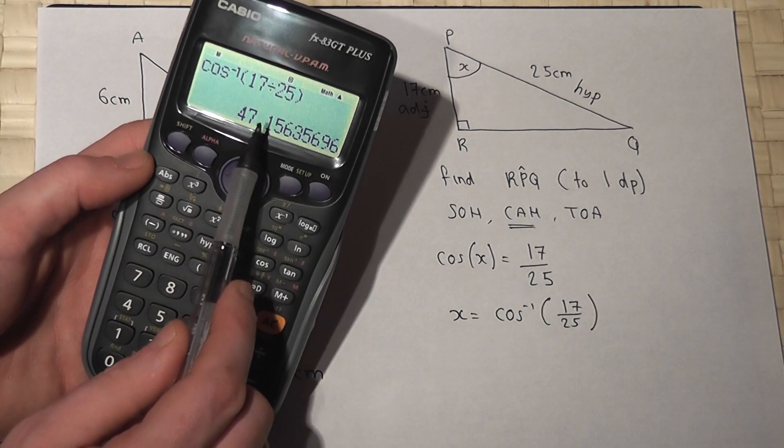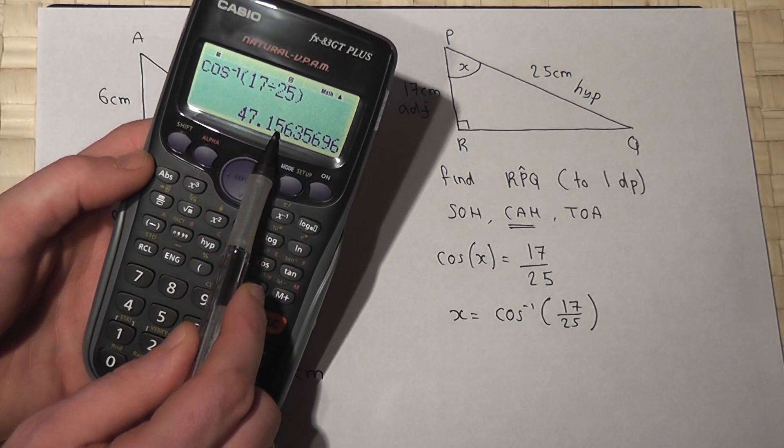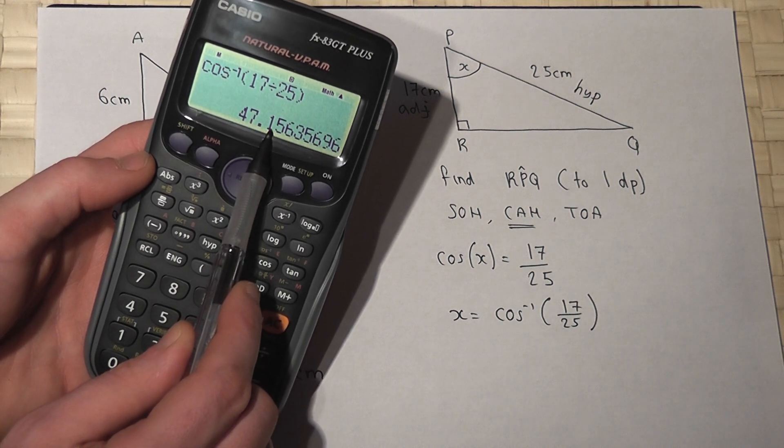Now, I want this to 1dp. Now, after the 1, there's a 5, so I therefore round the 1 up. So it's 47.2.